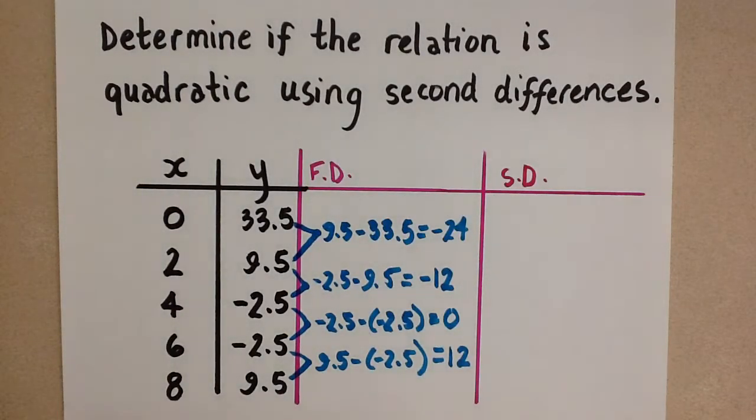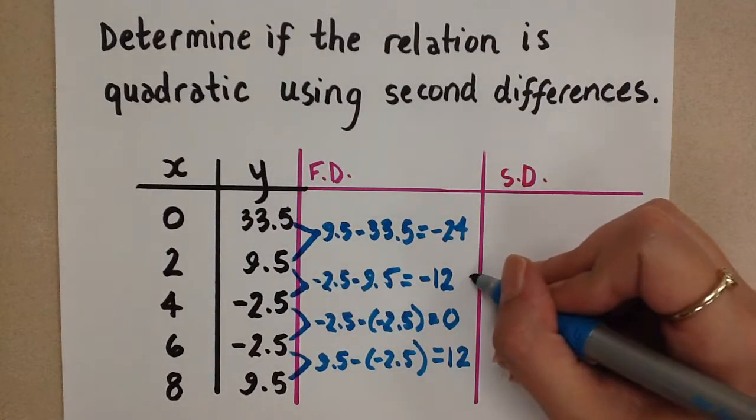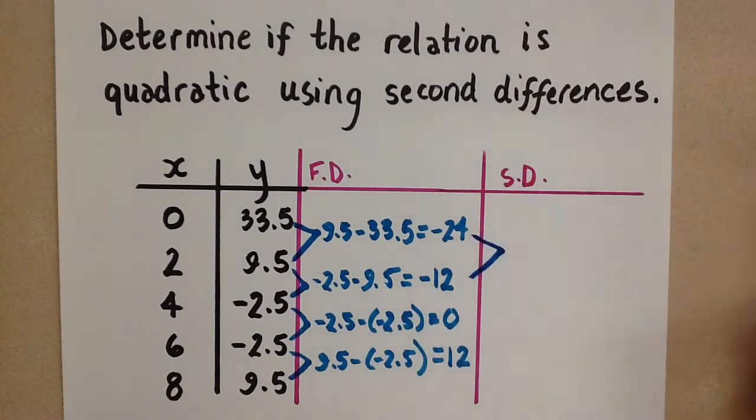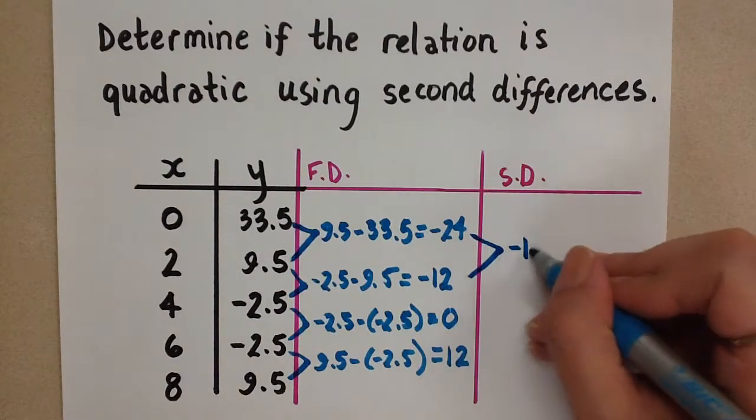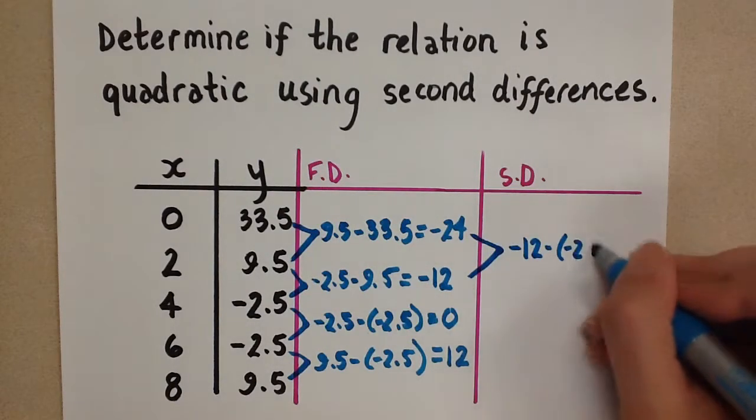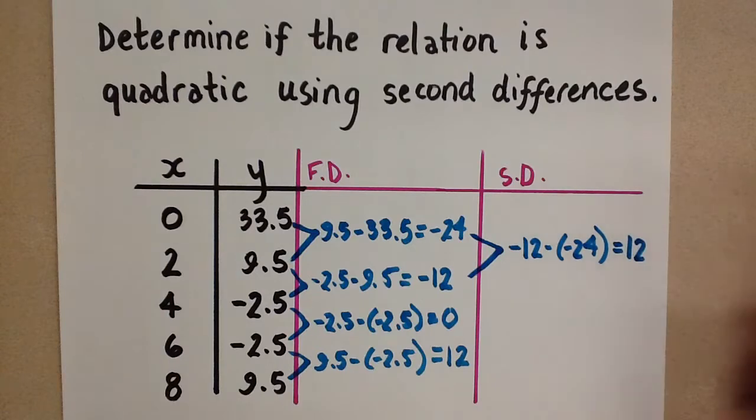So now we're going to subtract negative 12 minus negative 24. Like this. And we get positive 12.